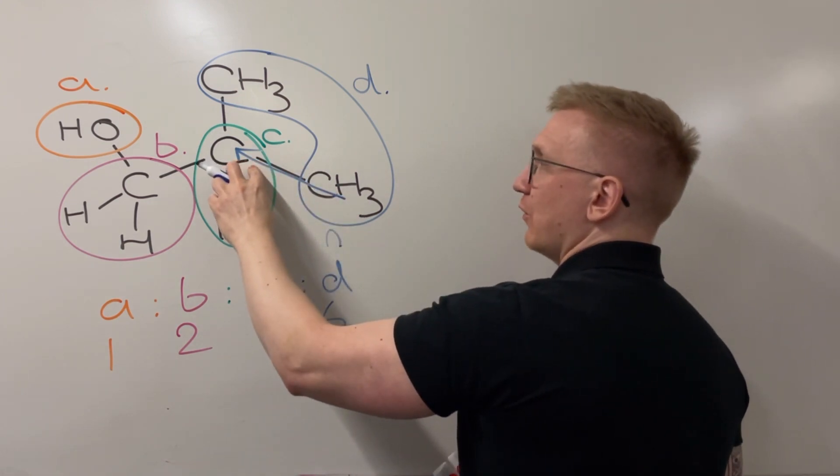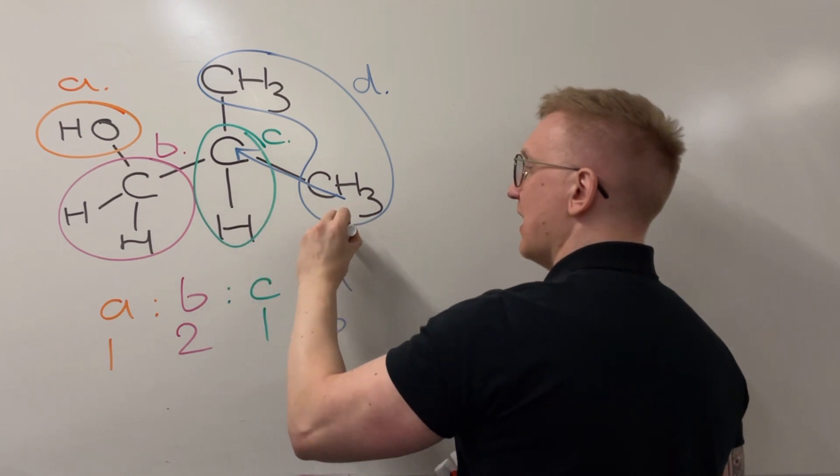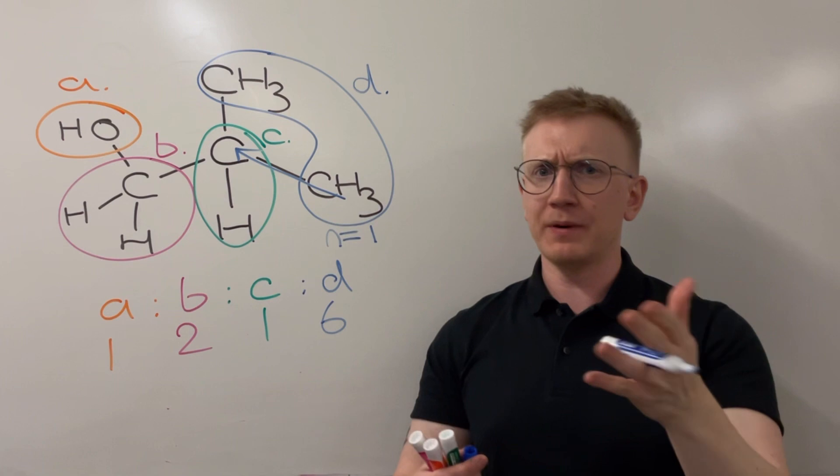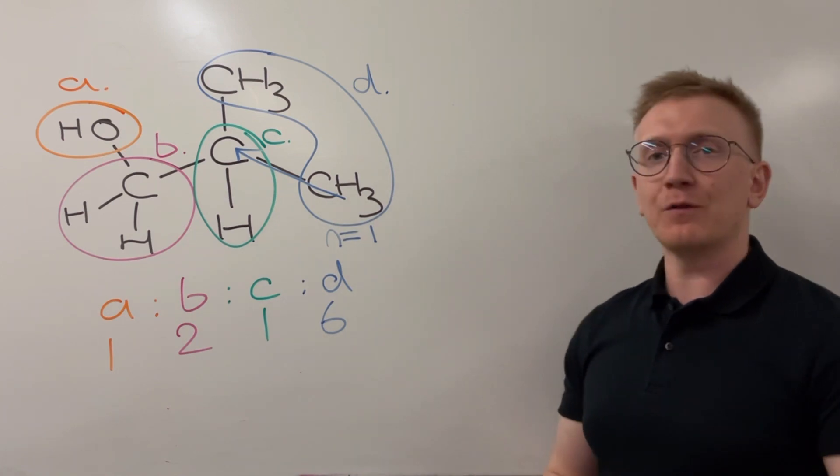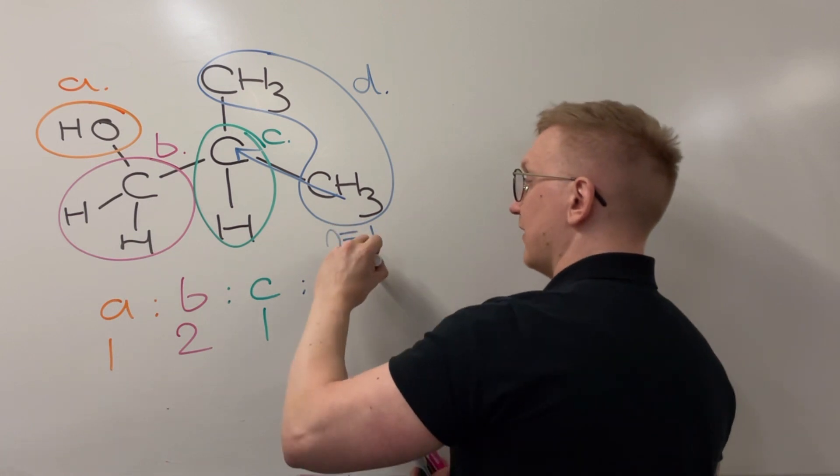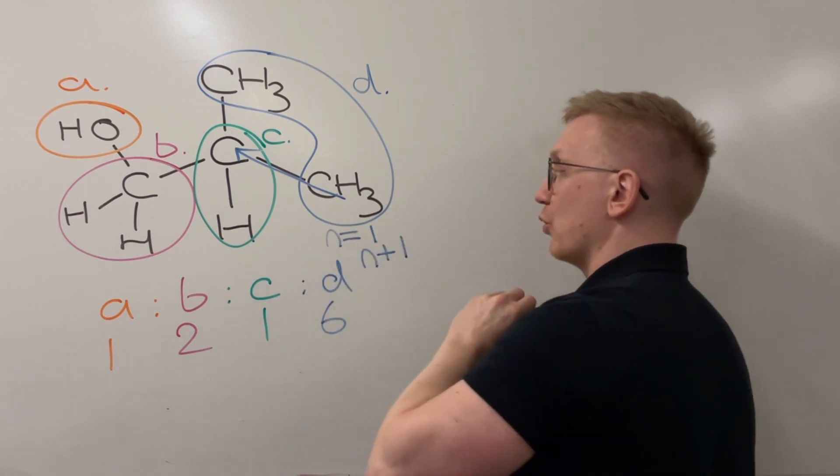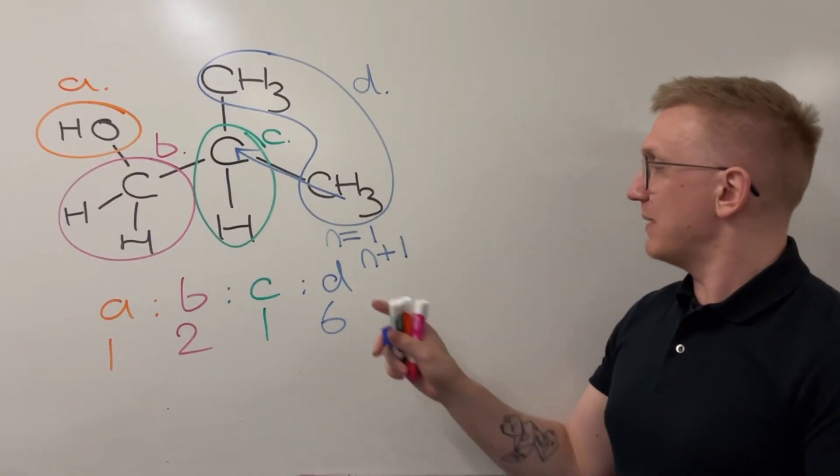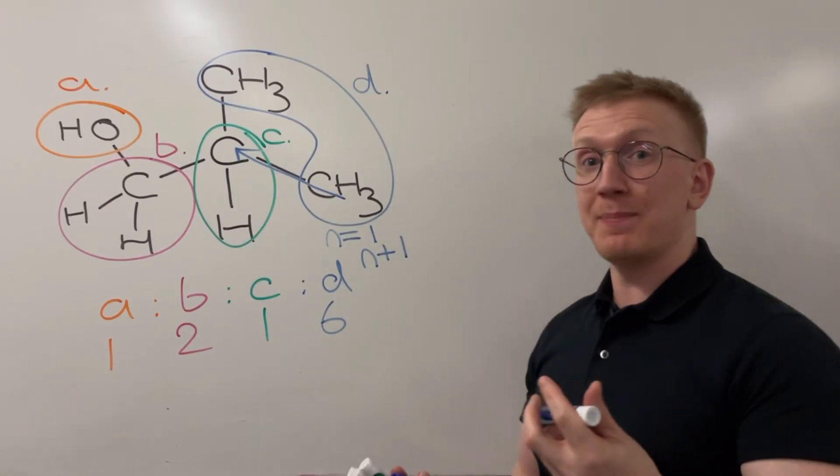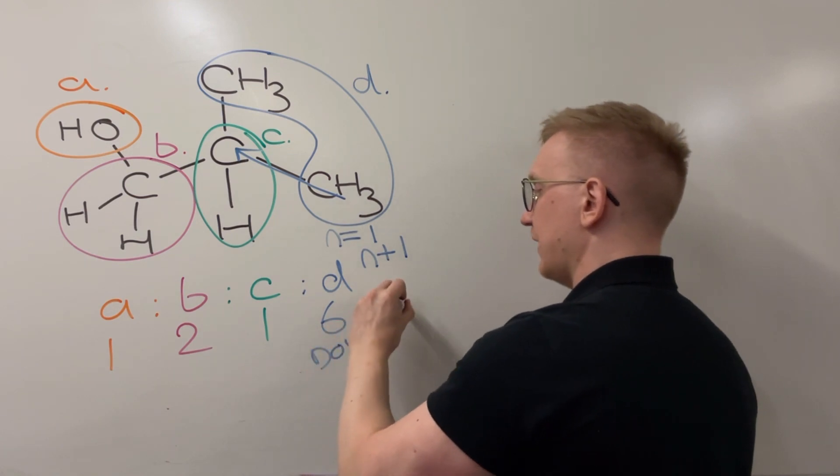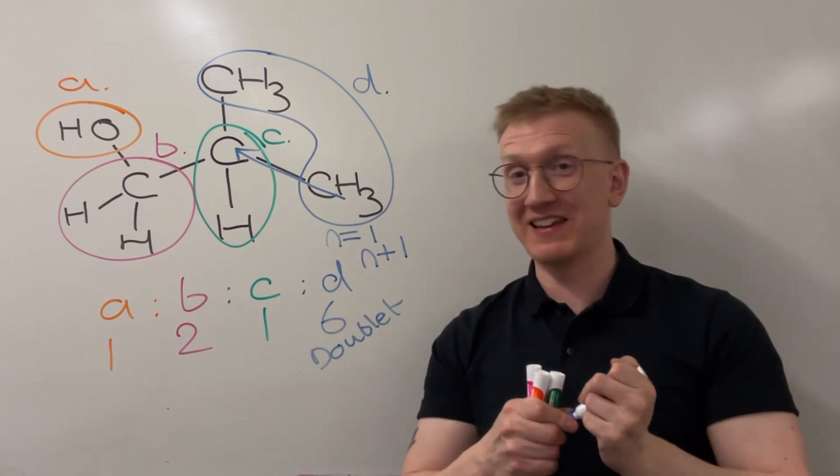So my N value, if I go to this particular carbon here, is going to be equal to just one. So it's a little low, but it doesn't matter because then that allows me to figure out what the splitting pattern is going to be, and my splitting pattern is going to follow the N plus one rule. So one and one is two, quick maths, and so that means environment D is going to be a doublet. Purely coincidental that it began with a D just there.